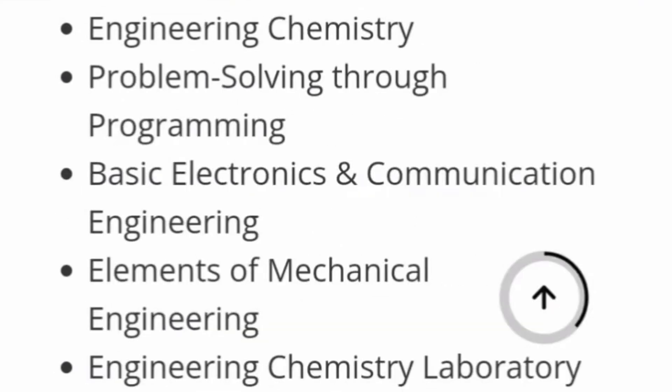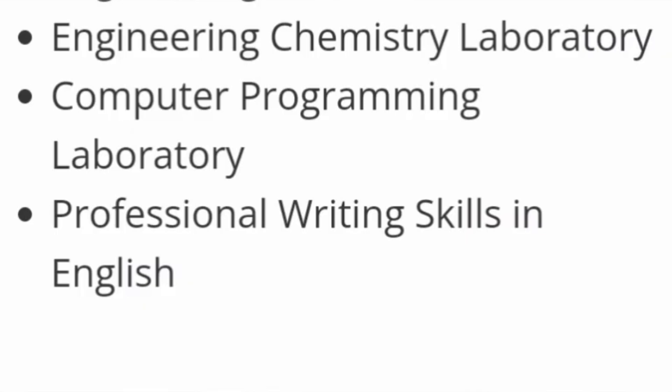Similar to engineering physics, you will also have engineering chemistry, basics of electronics and communication, elements of mechanical engineering, engineering chemistry laboratory, and so on. There will be only 5 papers per semester, so you will have to choose from these options. There will also be a chemistry lab, a computer programming lab, and professional writing skills in English. This is what is covered in the first and second semester, which is common across all engineering branches.